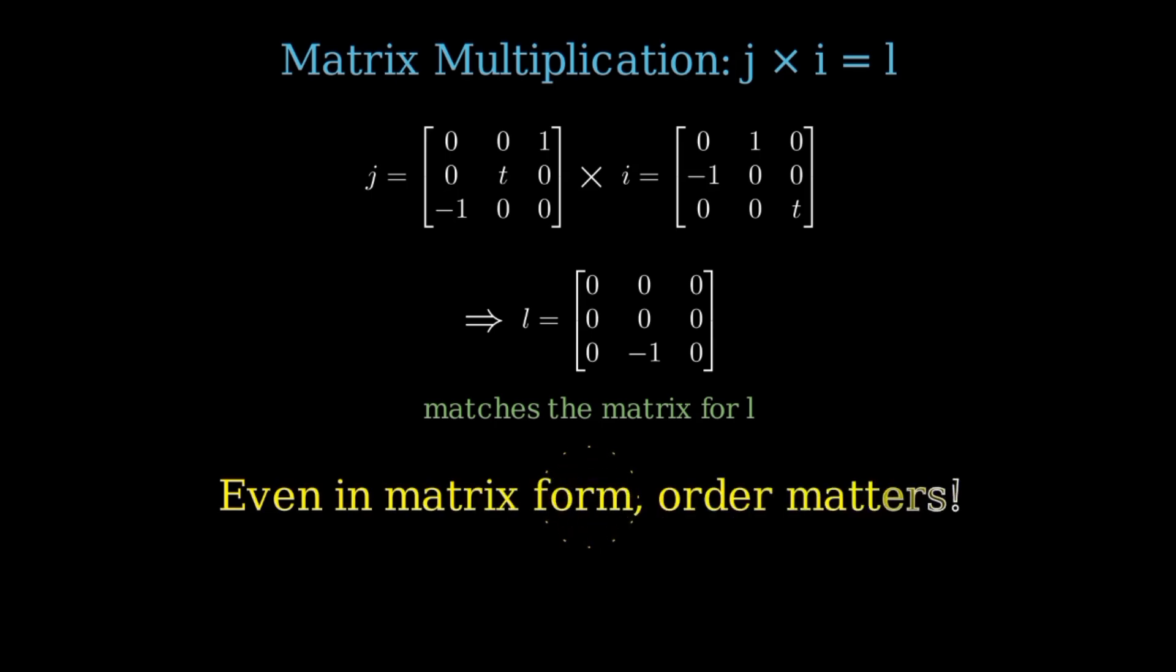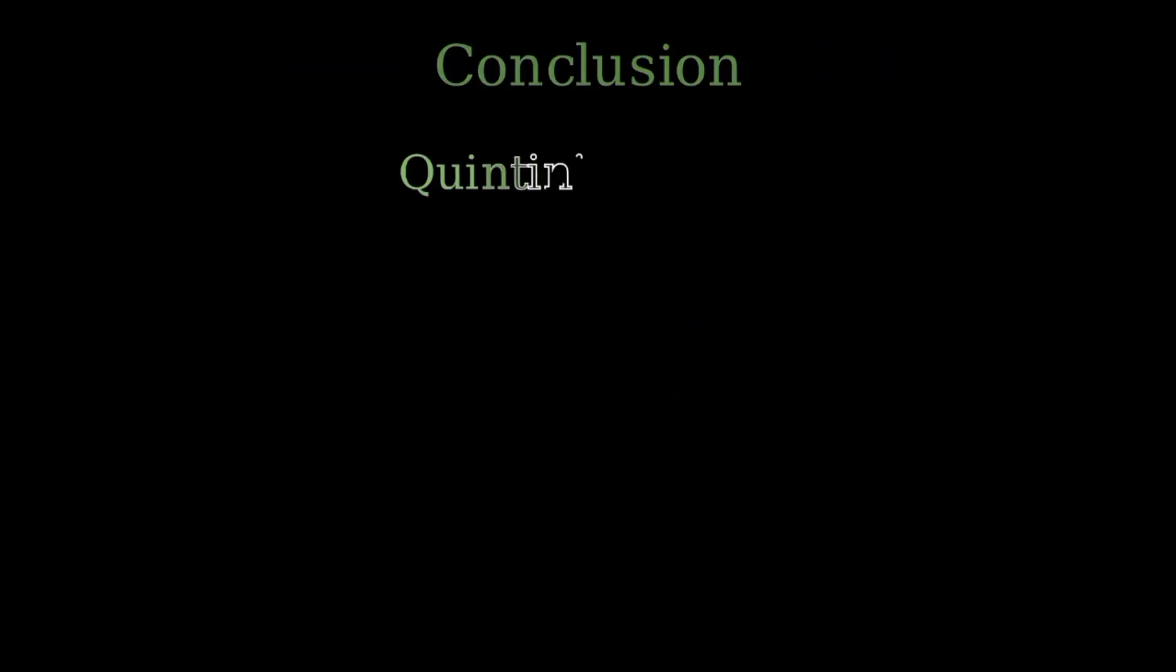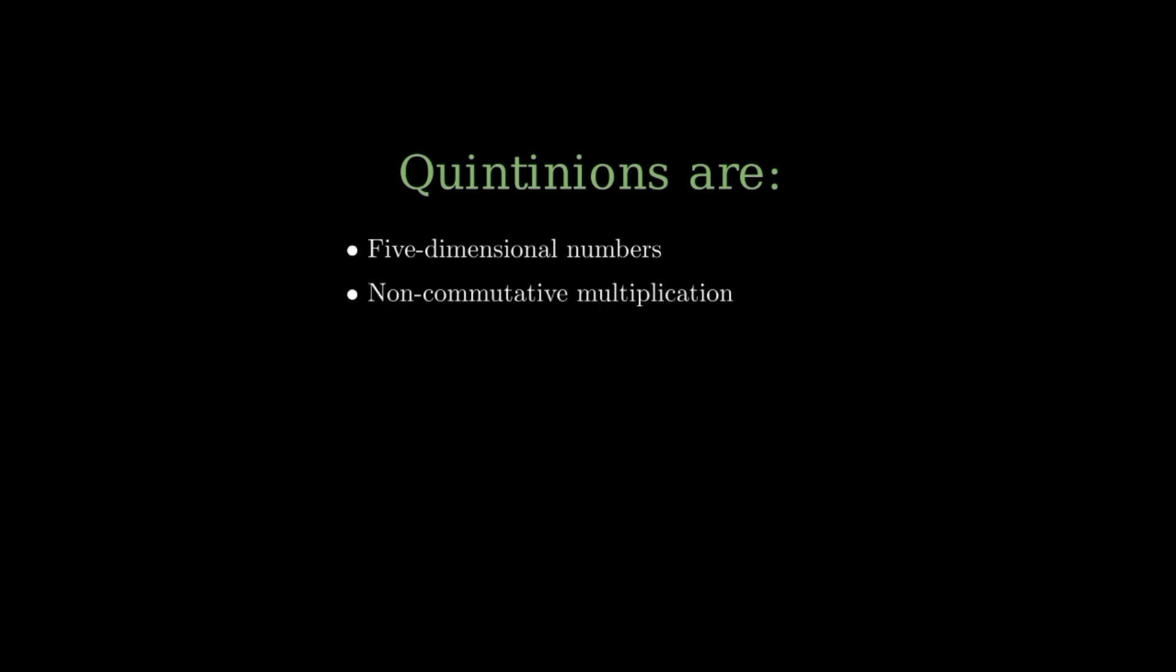So even in matrix form, the order of multiplication matters, just like in our algebraic definitions. This confirms the anti-commutative structure of our system. In conclusion, Quintinians are wild, five-dimensional numbers with non-commutative, non-associative multiplication, and strange nilpotent elements like K and L that square to zero.